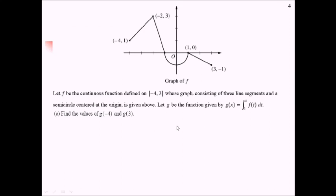All of our examples are going to rely on this graph right here with this little problem stem. We've got a continuous function f defined over negative 4 to 3, with some line segments and a semicircle. And then we have some function g, which is the integral from 1 to x of f of t dt.